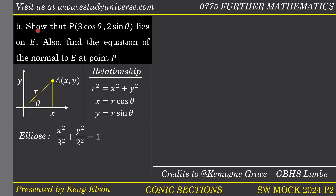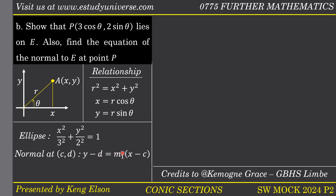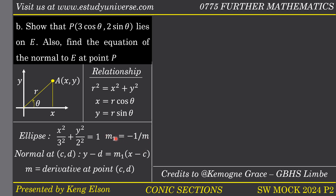Part B says we should show that the point P with coordinates (3 cos theta, 2 sin theta) lies on the ellipse E, and find the equation of the normal to the ellipse at point P. For the normal, the equation at a point (c, d) is: y minus d equals m₁ times (x minus c), where m₁ is the gradient of the normal. Since the tangent and normal are perpendicular, the product of their gradients equals negative one, so the gradient of the normal m₁ equals negative one over m, where m is the gradient of the tangent, i.e., the derivative at that point.